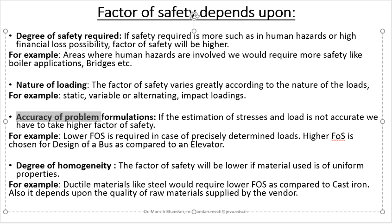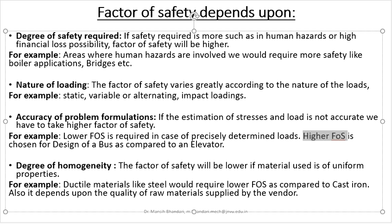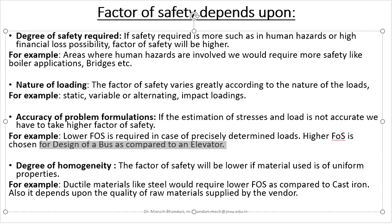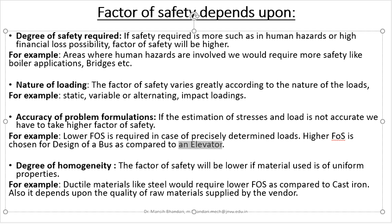The third point is accuracy of problem formulation. The factor of safety depends on how accurately you formulate the problem. A lower factor of safety is required in the case of precisely determined loads. For example, a higher factor of safety is chosen for the design of a bus as compared to an elevator, because in a bus you cannot determine the actual load — there might be 60 or 70 passengers in practical conditions. But in the case of an elevator, we can fix the load by installing a sensor so that if the load exceeds a particular limit, the elevator does not move.